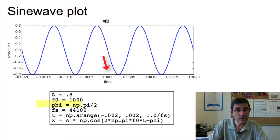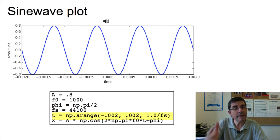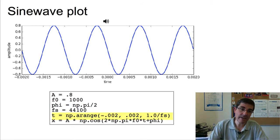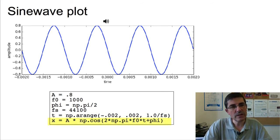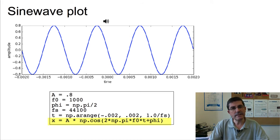And then, in order to generate the function, we need to generate a time array, which is all the time that we will be displaying. So small t is an array that goes from minus 0.002 seconds to 0.002 seconds, but of course sampled at the sampling rate, at fs. And this is the equation that we actually type into Python to generate the sine wave.